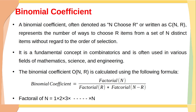The binomial coefficient C(n, r) is calculated using the following formula: binomial coefficient equals factorial of n divided by factorial of r into factorial of n minus r, where factorial of n is given by 1 × 2 × 3 × ... up to n.